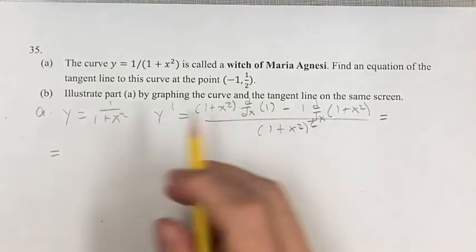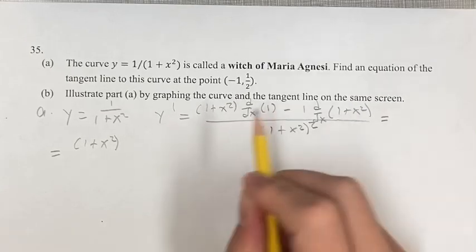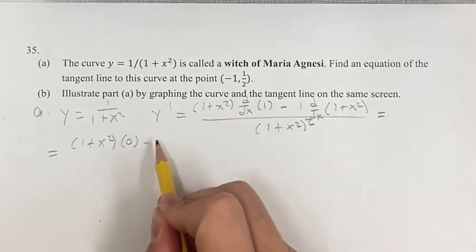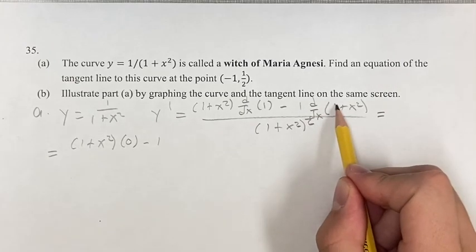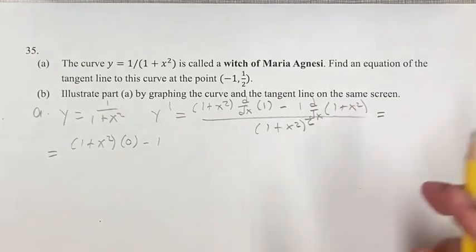This is 1 plus x squared. The derivative of 1 is 0 since 1 is a constant. Minus 1 times the derivative of 1 is again 0. So 0 plus the derivative of x squared is just the derivative of x squared.